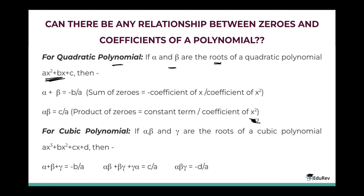Let's see this for the cubic polynomial as well. If α, β, γ are the roots of the cubic polynomial ax³ + bx² + cx + d, then α + β + γ = −b/a, whereas αβ + βγ + γα = c/a, and the product of all roots α × β × γ = −d/a.